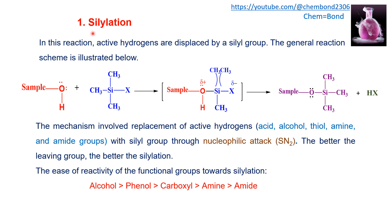The first reaction is silylation reaction. In this reaction, the active hydrogen is displaced by the silyl group. The reaction scheme is given here. The sample containing the active hydrogen has that hydrogen replaced by a silyl group. A silyl group is introduced, producing a transition state or activated complex, which then breaks down to produce a derivative and an acid. The trimethylsilyl group is introduced into the analyte, replacing the H group, which combines with the X group to produce acid.